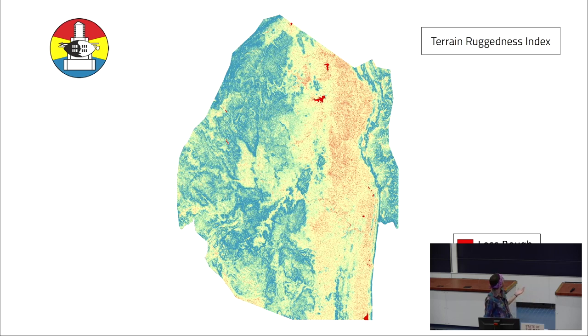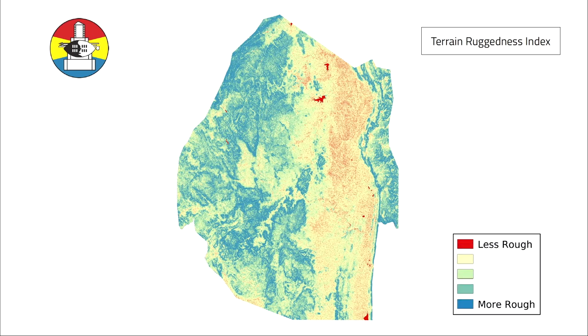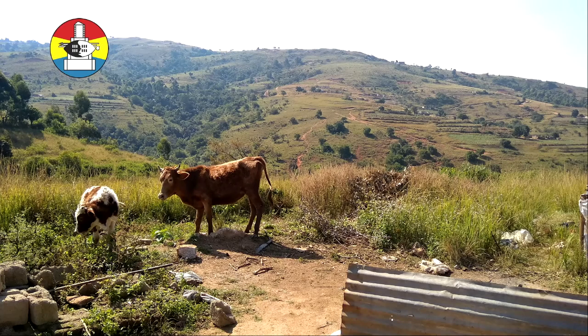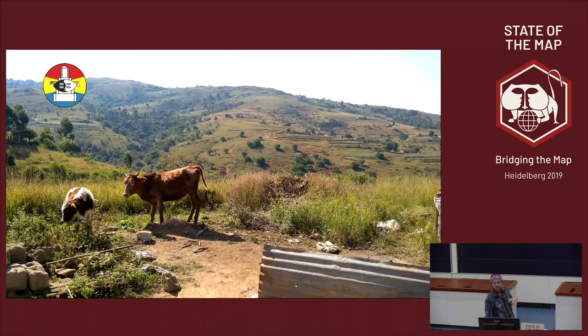What it lacks in size it makes up for in hills. This is a map of the terrain ruggedness — the left part, the west, is super hilly. On the ground in Eswatini you see hills, a lot of cattle, and all these little homesteads dotted on the hillside.